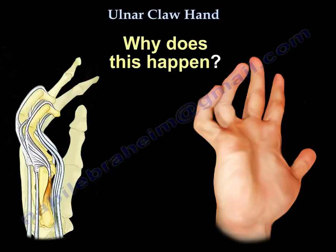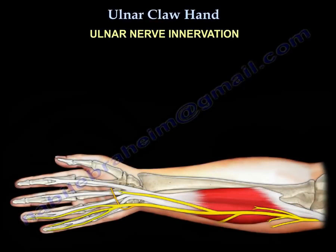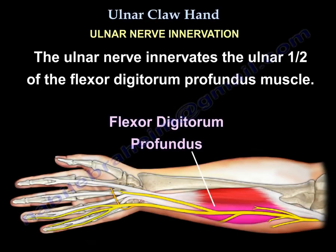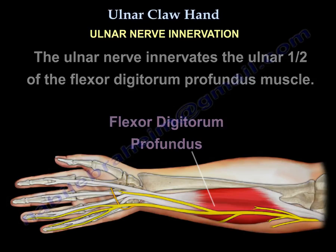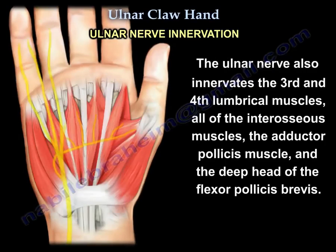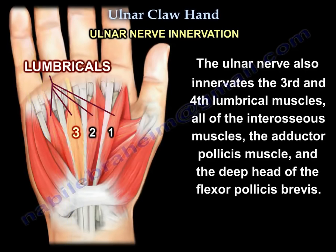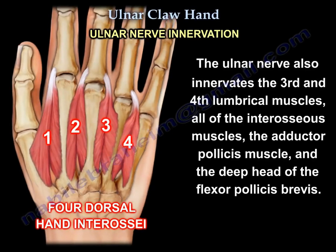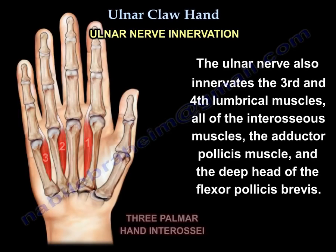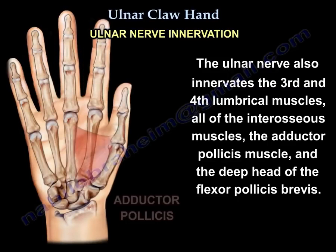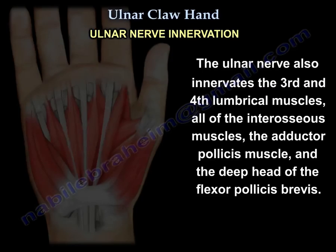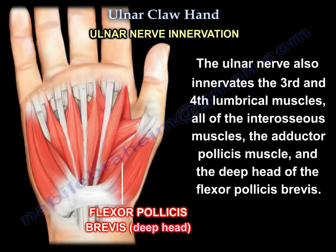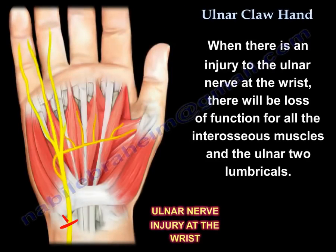So why does this happen? Let's check the ulnar nerve innervation. The ulnar nerve innervates the ulnar half of the flexor digitorum profundus muscle. It also innervates the third and fourth lumbrical muscles, in addition to the adductor pollicis muscle and the deep head of the flexor pollicis brevis. Injury of the ulnar nerve at the wrist will lead to loss of function of all the interossei muscles and the ulnar two lumbricals.